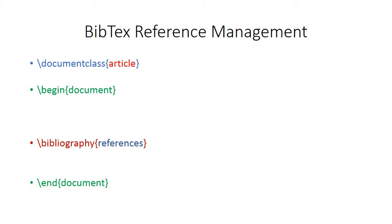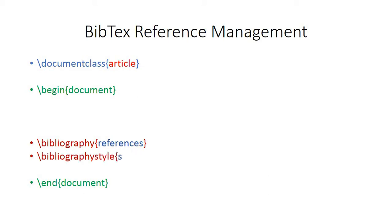Another required command is \bibliography{} — in the curly braces you write the file name where you saved your references. We named it references.bib, but here you do not need the .bib extension, just write 'references'. Another command is \bibliographystyle{}, which specifies the style of your references. Here you can write nature, science, APA style, etc.